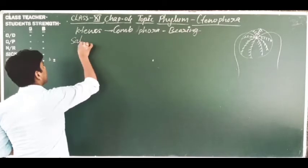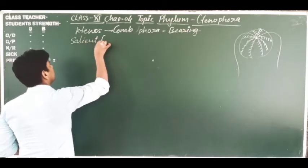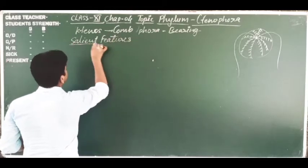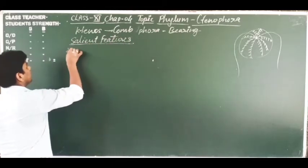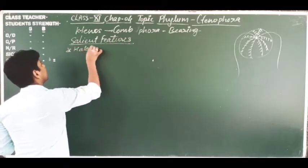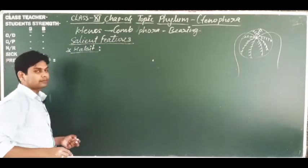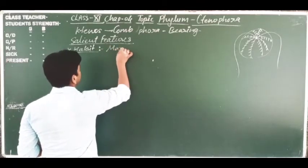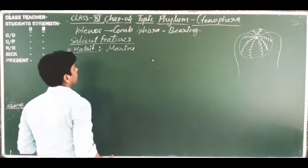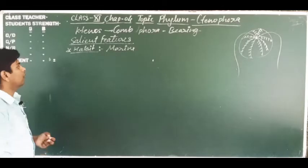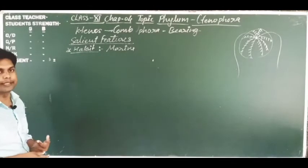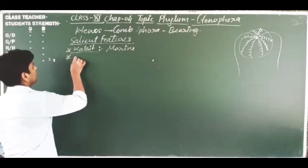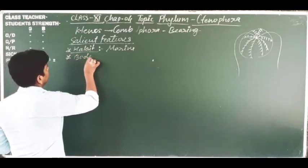Now let's discuss the salient features of this phylum. First, the habitat: the habitat of these animals is marine. They are mostly present in marine habitat and are free-swimming in water.